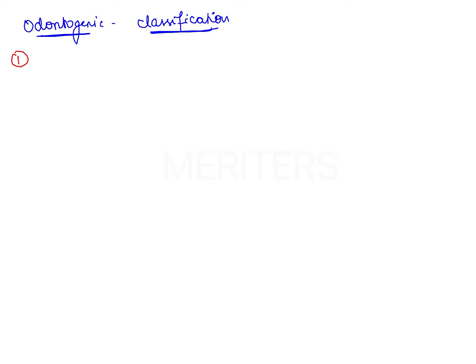The first category of odontogenic cysts is derived from the rests of Malassez, which are remnants of Hertwig's epithelial root sheath present in the periodontal ligament space. This category includes two cysts: radicular cyst and residual cyst.